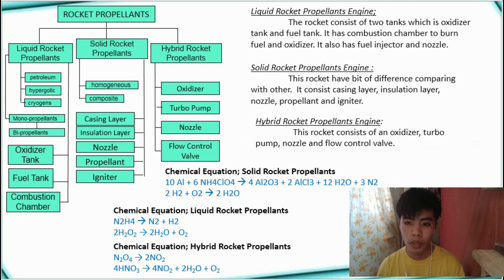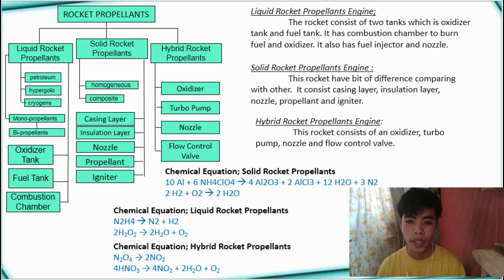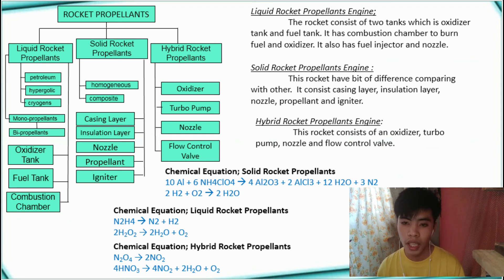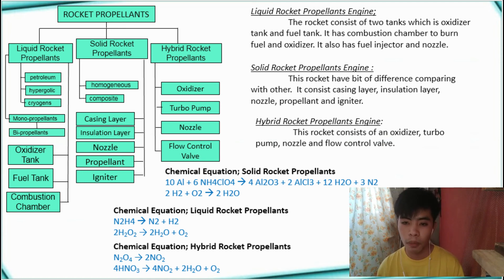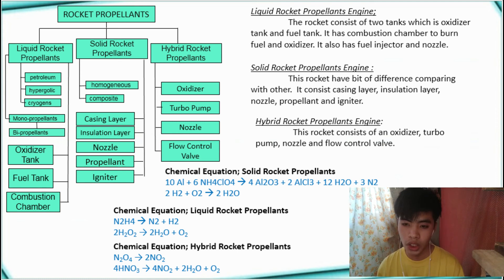Solid rocket propellants in general. There are two families of solid propellants: homogeneous and composite. These rockets have differences compared with others. The rocket consists of a casing layer, insulation layer, nozzle, propellant, and igniter.